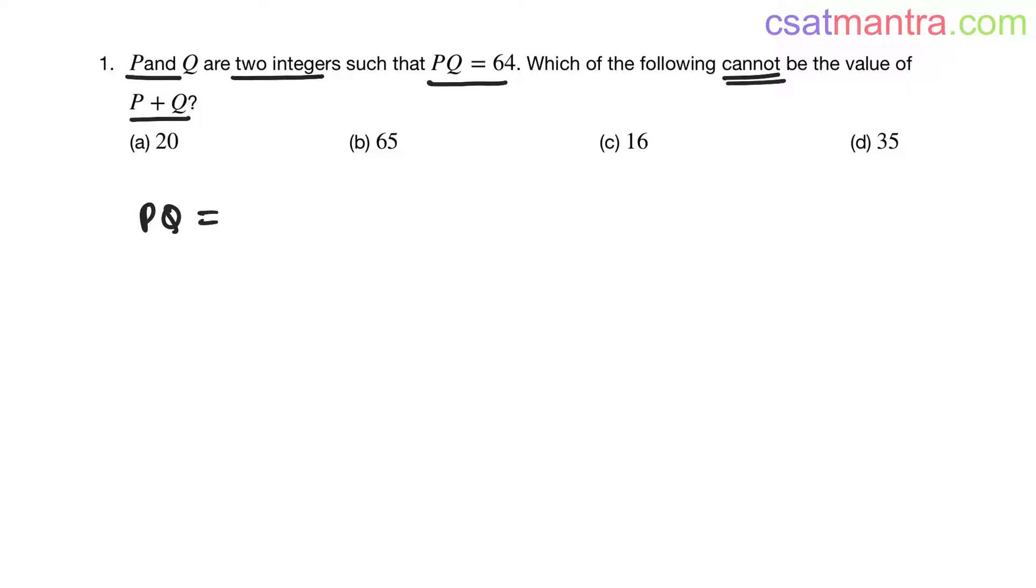P and Q, P into Q is 64. Now I am writing this 64 as 1 into 64, and again this as 2 into 32, 8 into 8. 8 into 8 is 64, 2 into 32 is 64. Again, 4 into 16, my friends.